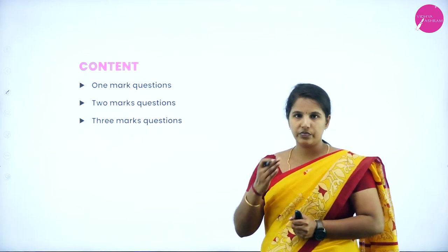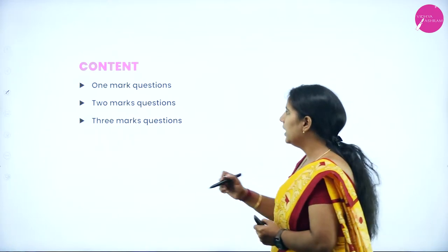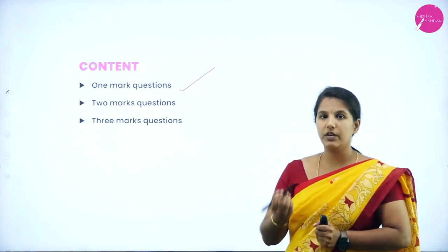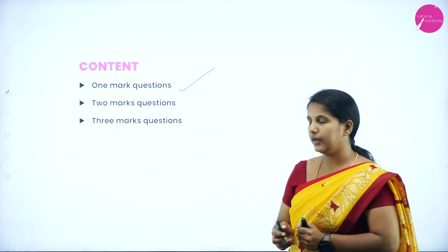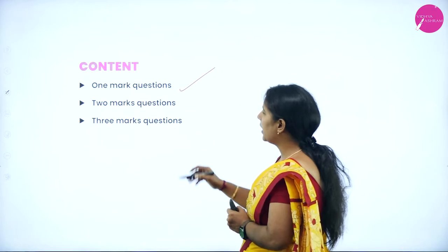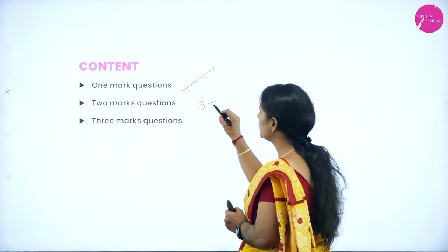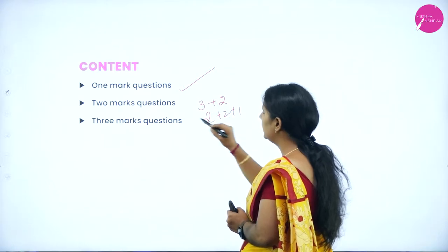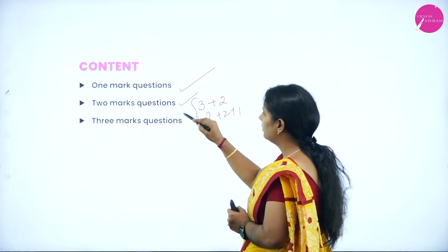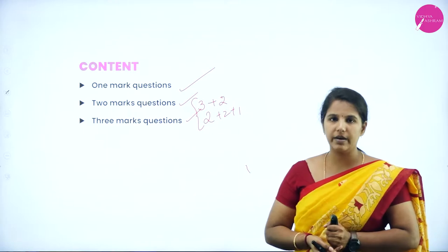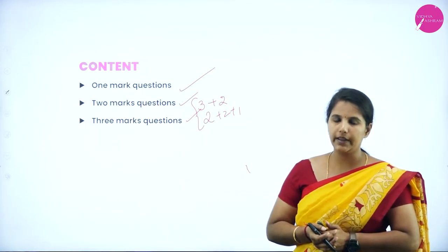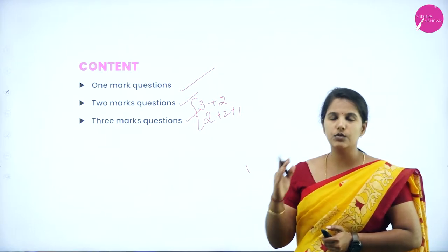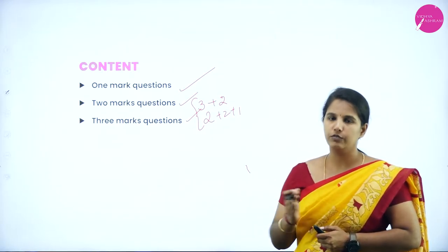In the one-mark question we are going to discuss the types of reagents which will be asked frequently. Coming into the five-mark questions, it has been split into 3+2 or 2+2+1. That is why I have listed out the 2 and 3 mark questions from this unit. There is no standalone five-mark question; it has been split into 3+2 and 2+2+1.